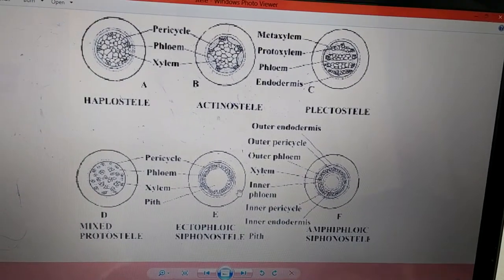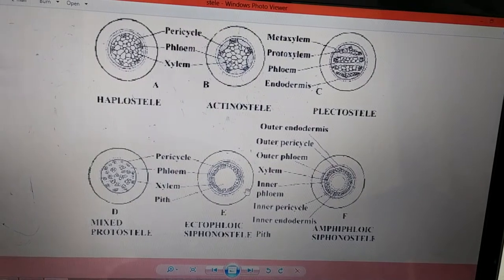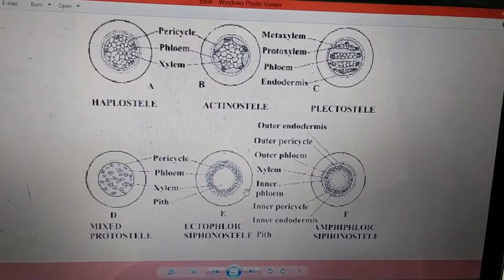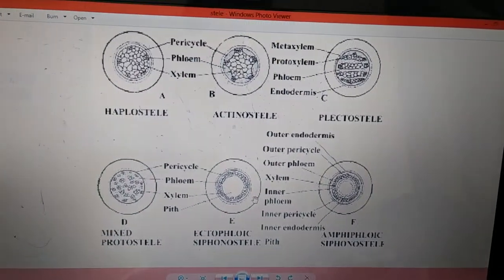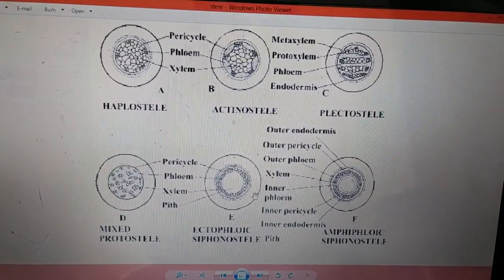Here we will be discussing steeler types and its evolution in pteridophytes. Now what exactly does steel mean? Steel is derived from Greek language. The origin of the steel word is from Greek, meaning pillar or a rod-like structure.